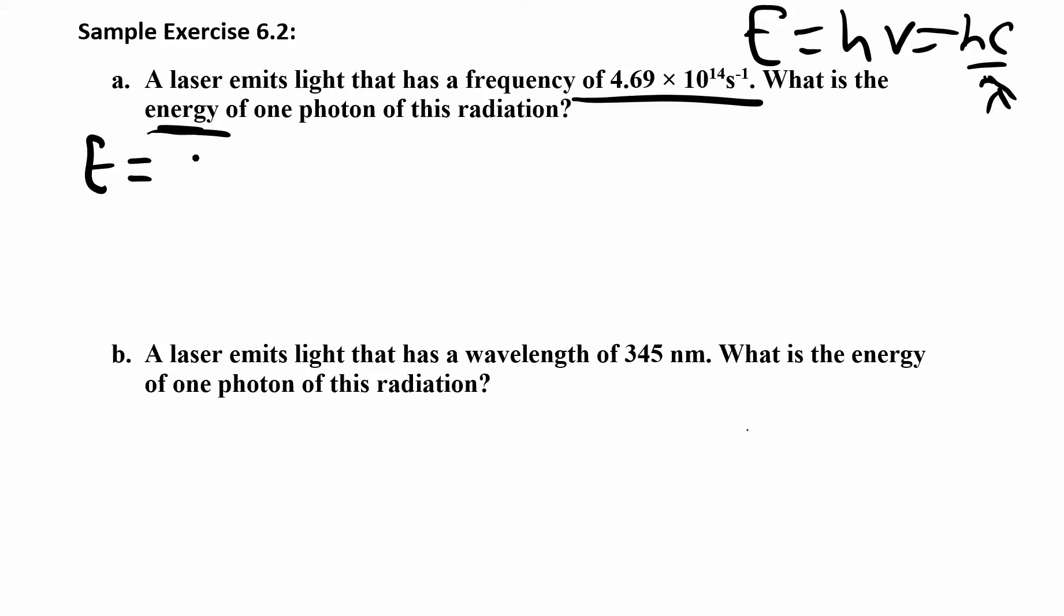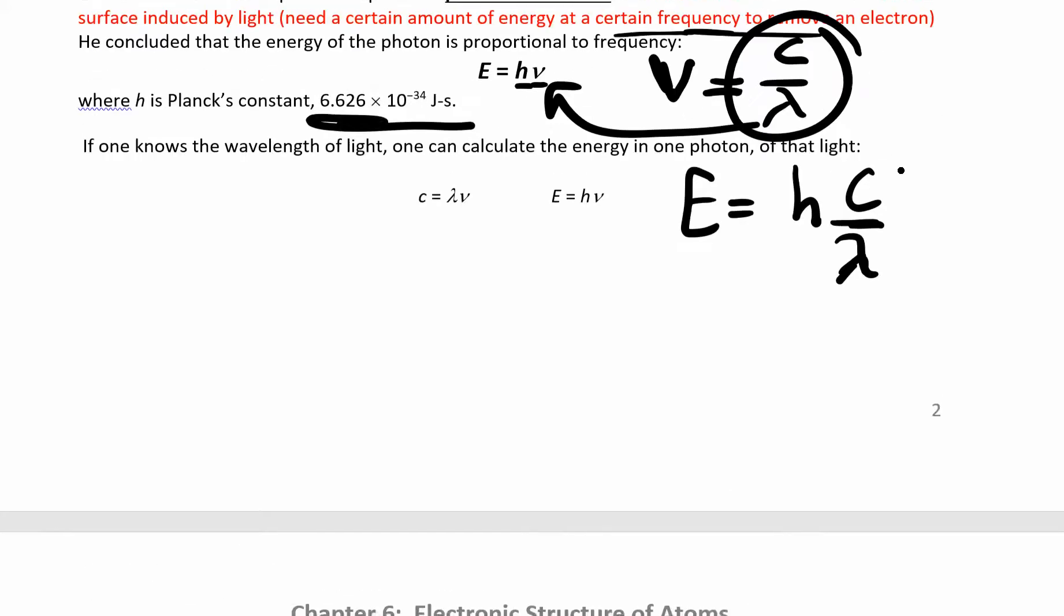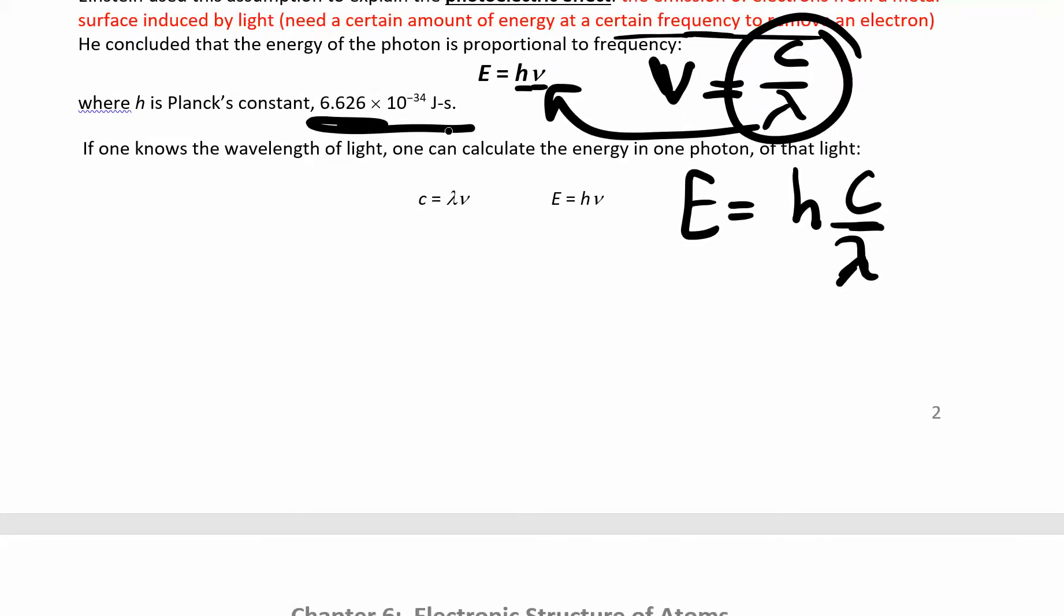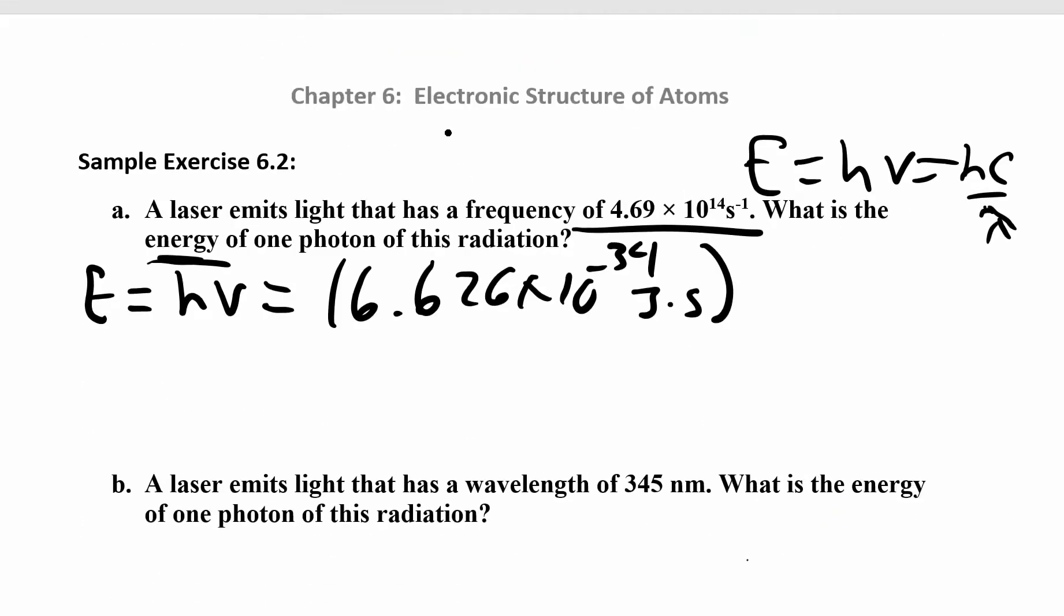So we have energy is equal to h times nu. We know h is 6.626 times 10 to the negative 34 joules times seconds. That's Planck's constant. So we had in the section above, we talked about Planck's constant right here, 6.626 times 10 to the negative 34 joules times seconds. That's h.